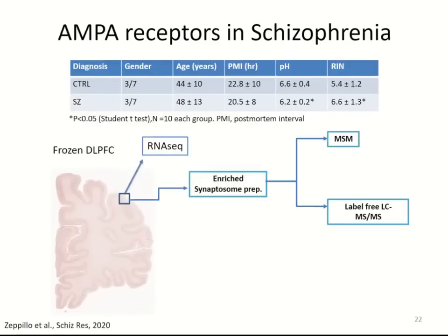To understand the functional changes that may happen there — knowing there is dendritic spine loss and homeostatic changes — we used 10 controls and 10 schizophrenia subjects, three females and seven males each. There was no difference in age and no difference in post-mortem interval. We measured pH and RNA integrity number (RIN). There are differences in both — schizophrenia seems to have better RIN numbers, and some pH differences also seen in other studies.